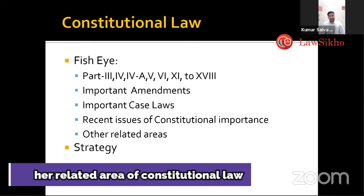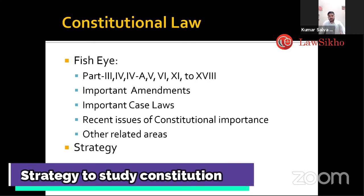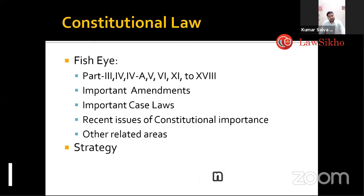Now comes the strategy — how to read and understand the constitution. It is sometimes very difficult to remember every article because two or three questions in the paper will be article-specific, like which article talks about state emergency or financial emergency. You need to identify different strategies. For example, Article 124 talks about the Supreme Court — add 90 to it, you get 214, which is where the High Court begins. The subsequent procedure related to Supreme Court and High Court follows in the subsequent articles.